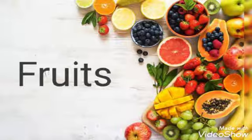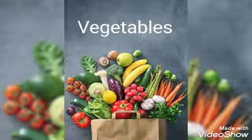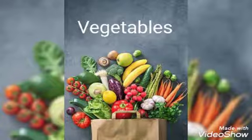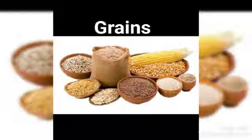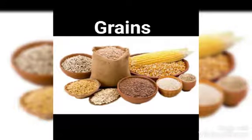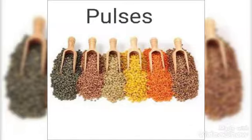Fruits. Vegetables. Grains — means anaj. Pulses — means dalen.